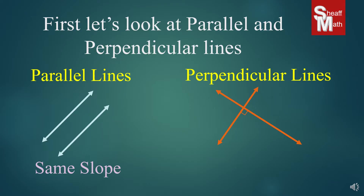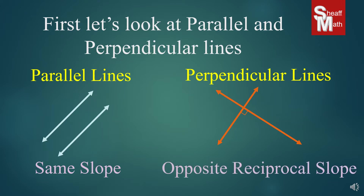Perpendicular lines, on the other hand, have a different type of slope. A lot of people think it's just going to be the opposite of what the other one is, but it's not. It's called opposite reciprocal slope, and we're going to talk about it in a little bit.